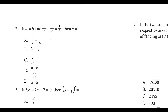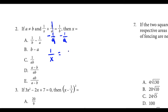For this one, we have to do a little bit of algebra. They're telling us that A does not equal B, and we're solving for X. The first thing that jumps out is let's subtract 1 over A on both sides. This gives us 1 over X equals 1 over B minus 1 over A.